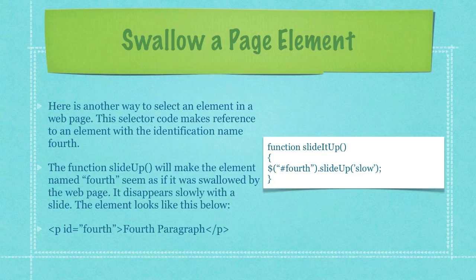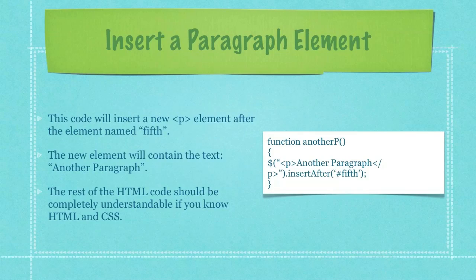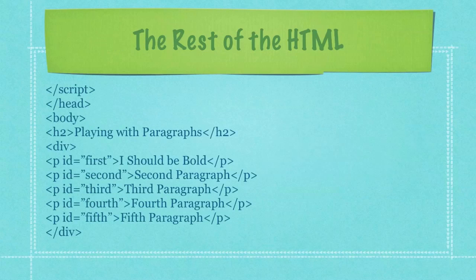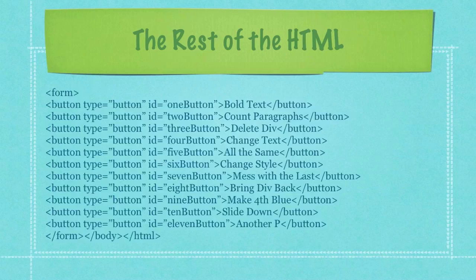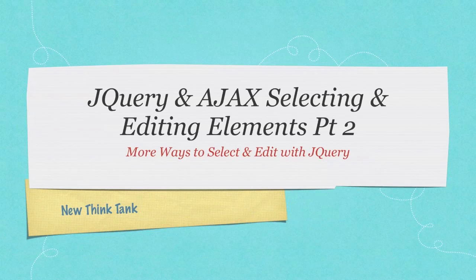This code will insert a new paragraph element after the element named 'fifth'. The new element will contain the text 'another paragraph'. In all circumstances, the rest of the HTML code should be completely understandable if you know HTML and CSS — and here it is for you to look at. You can also check out New Think Tank to download all of this code; it's 100% free and free to use in any way you'd like.